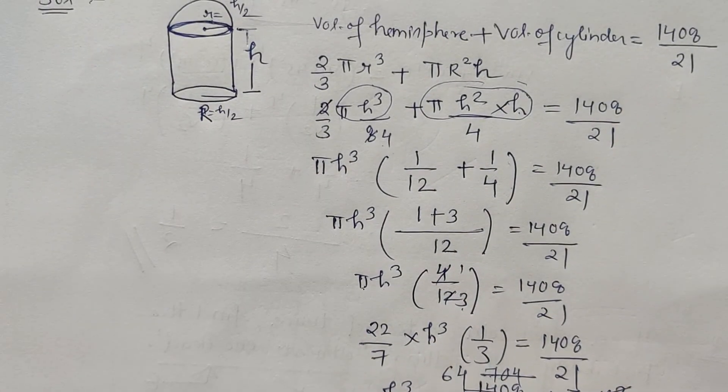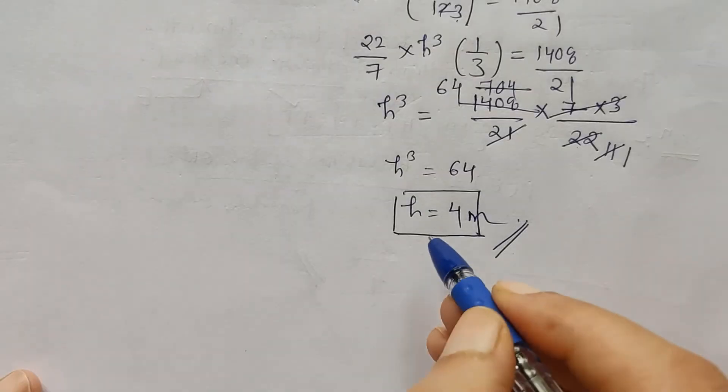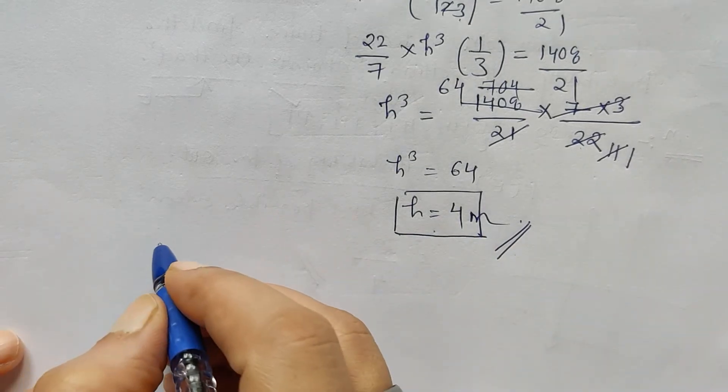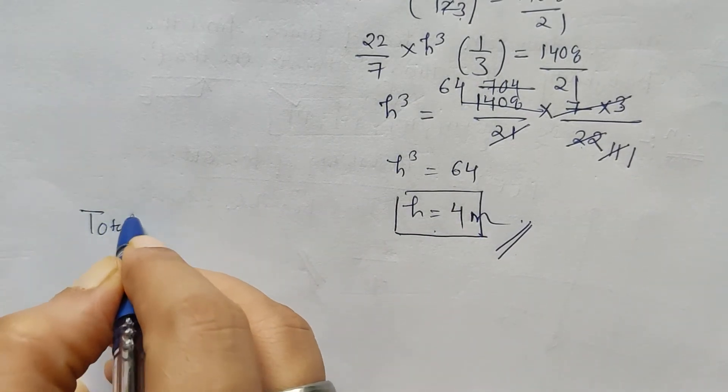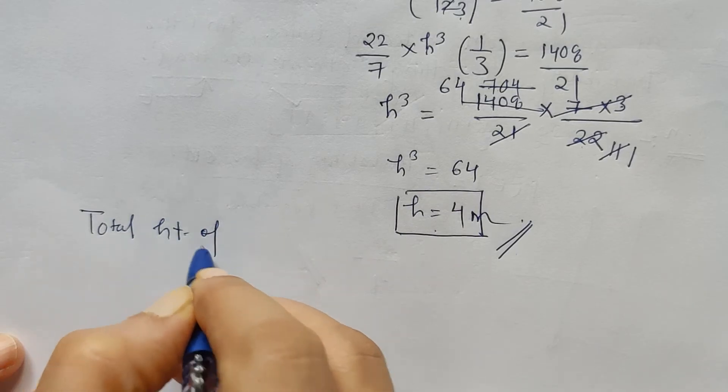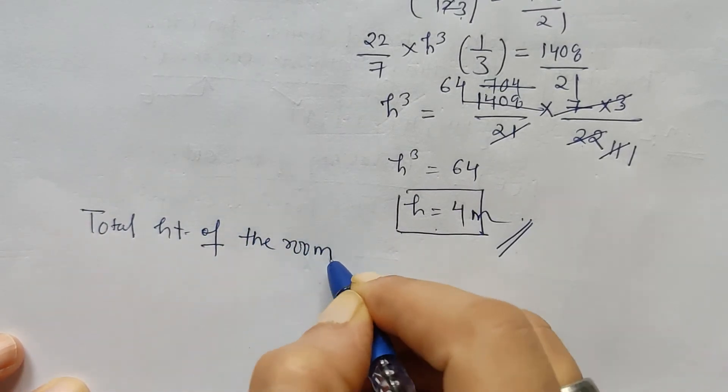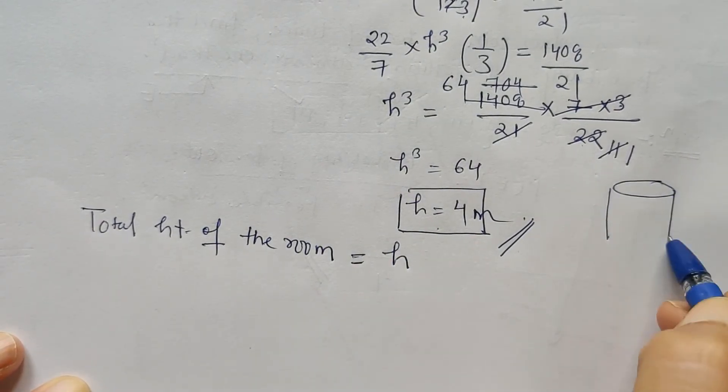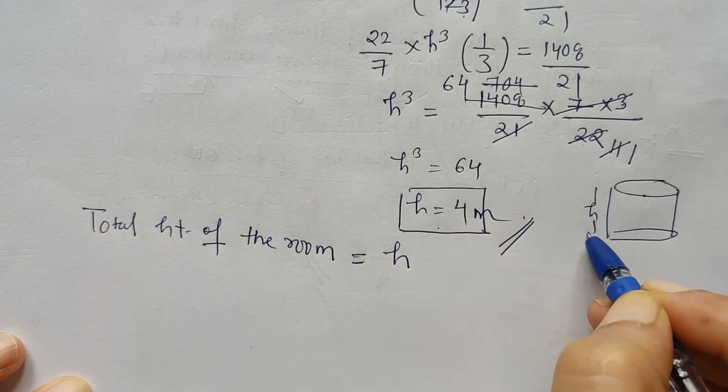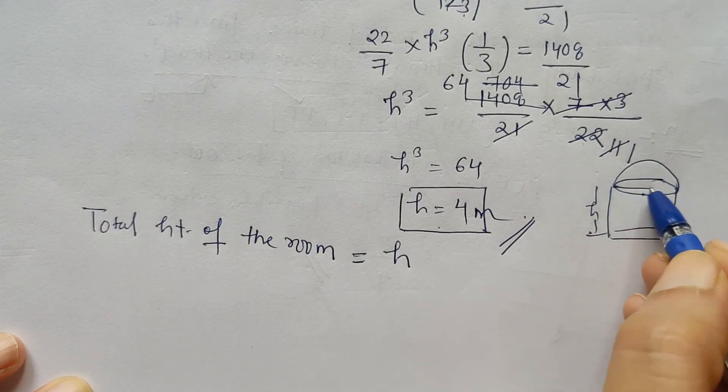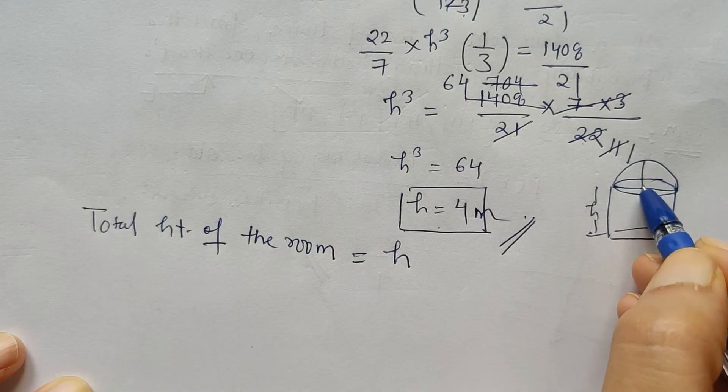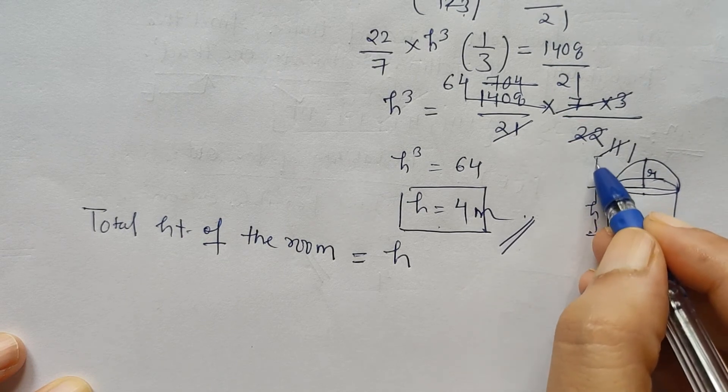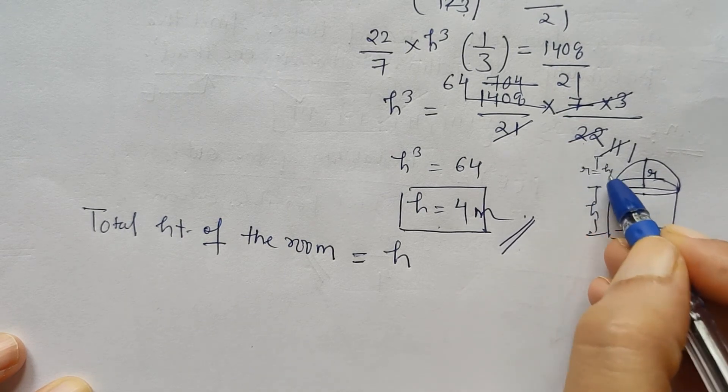Find the total height of the room. Here h that we have obtained is the height of only the cylindrical portion, but we are asked to find the height of the room. So total height of the room will be this h portion, the height of the cylindrical part, but we also have a hemispherical dome above it, right? So this is nothing but the radius, so we have to add the radius also to it. So this is h plus r, and r is again in terms of h, h by 2.